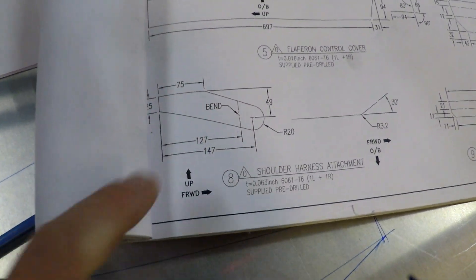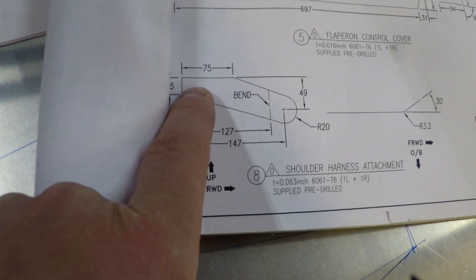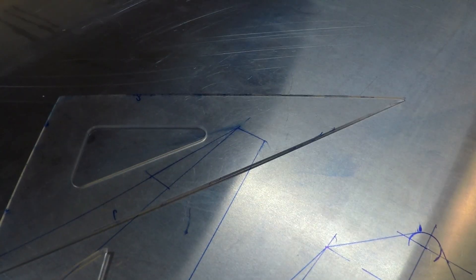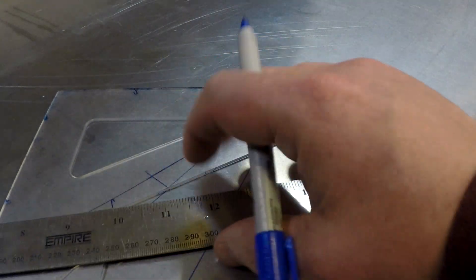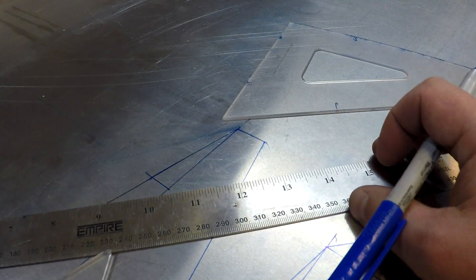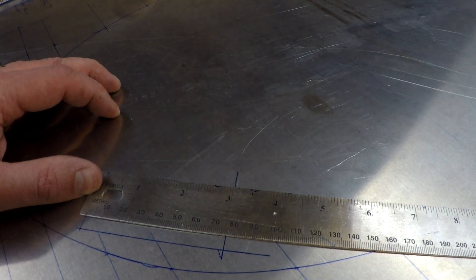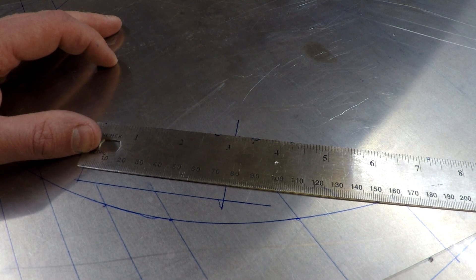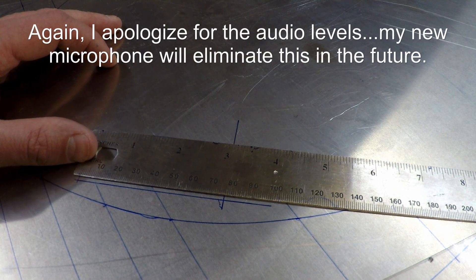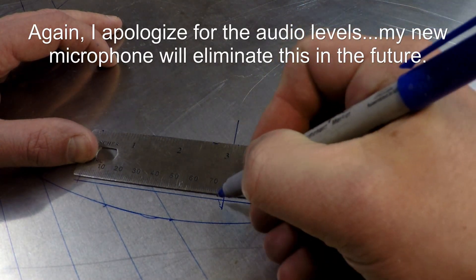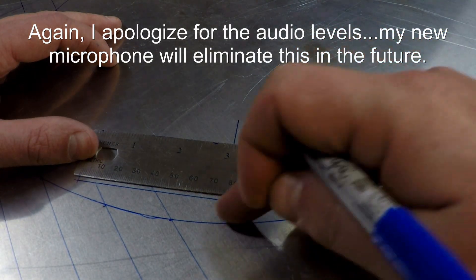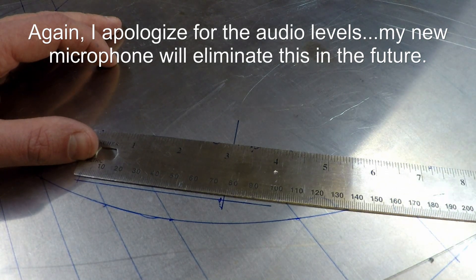And so I'm going to take this line here on the shoulder harness attachment, which is 75 millimeters long, and I'm going to make that this line. And I actually made my two reference lines 77 millimeters apart, which is kind of funny. So what I'm going to do is just go ahead and mark that at 75 millimeters. So we'll put a hash mark at 75, and that gives me the start of the upsweep towards where the rounded edge is.